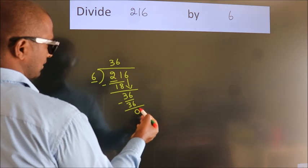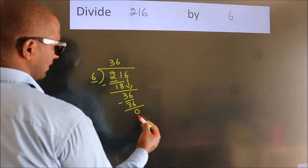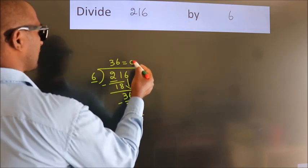After this, no more numbers to bring it down. And we got remainder 0. So, this is our quotient.